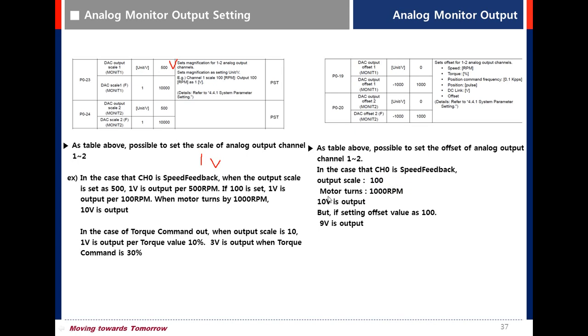when the speed reaches 1000 RPM, 10 volts is output. But if the offset value is set to 100, 9 volts is output due to the offset.